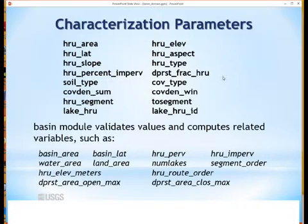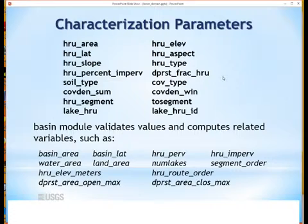The Basin Module validates and computes the topological characterization type parameters like elevation, latitude, aspect, and percent impervious — there's a whole list that it looks at — and makes sure that they are consistent with each other and within expected ranges.